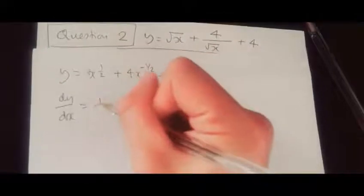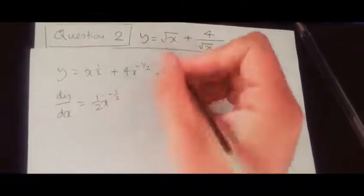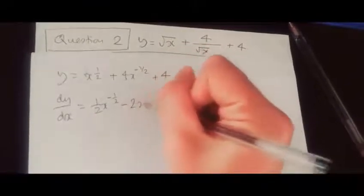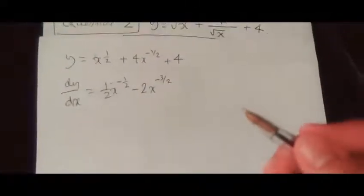So dy over dx: first we drop the power half, so you got half x and subtract by 1, it's negative half. Drop the minus half against 4, so 4 times minus half is minus 2x, subtract by 1 is minus 3 over 2, and the derivative of 4 is nothing.